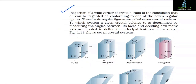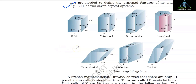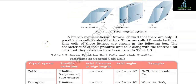Inspection of a wide variety of crystals leads to the conclusion that all can be regarded as conforming to one of seven regular figures called the seven crystal systems: cubic, tetragonal, orthorhombic, hexagonal, rhombohedral, monoclinic, and triclinic. A French mathematician Bravais showed that there are only 14 possible three-dimensional lattices, called Bravais lattices. Table 1.3 lists the seven primitive unit cells and their possible variations as centered unit cells.